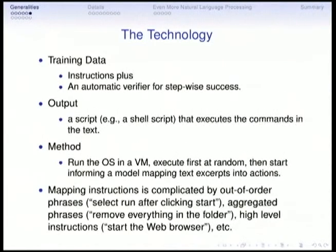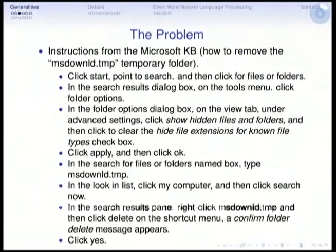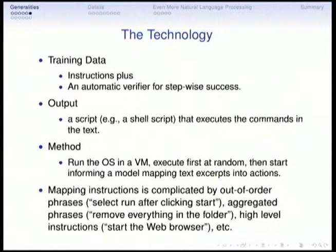The training data is the text instruction plus some way to tell that you're doing the right thing. They do this by checking that the instructions refer to text you should be seeing on the GUI at that time — things like 'show hidden files'. The reward function is: as you go through these instructions, you make sure you are seeing the text on screen you're supposed to see. If you don't, you discount the probability of that action being correct. The output is that type of action script, generated by running in a virtual machine and executing actions first at random, then informing a model that maps things.